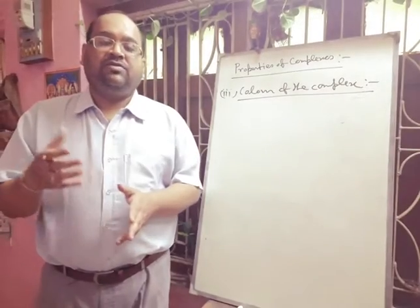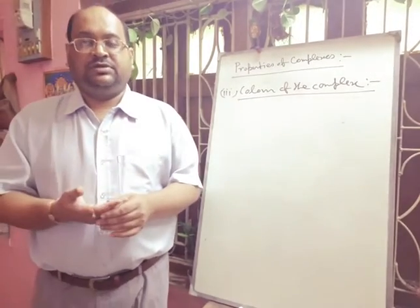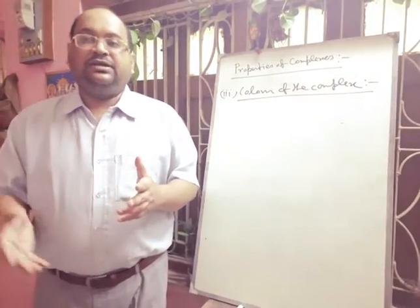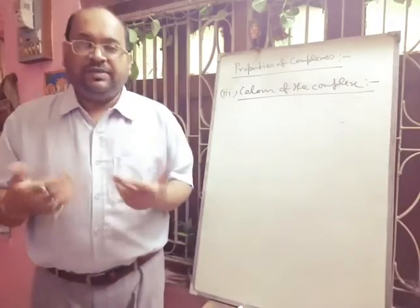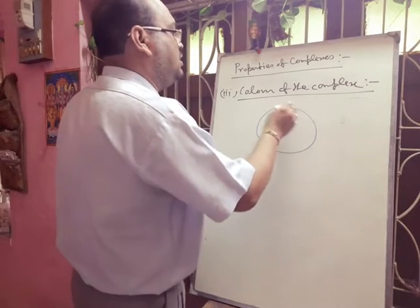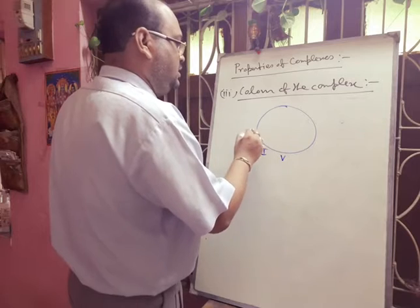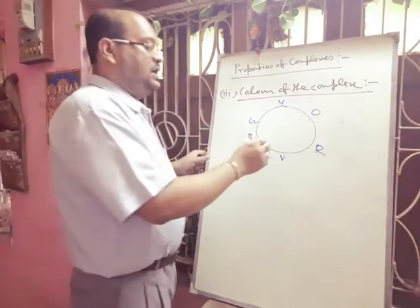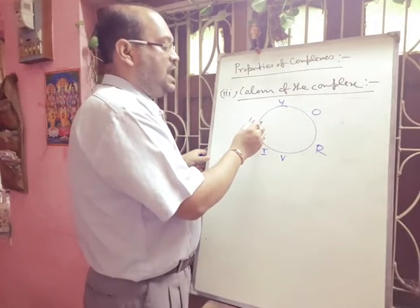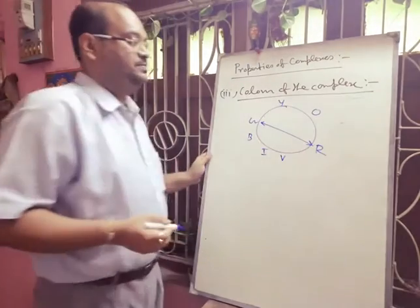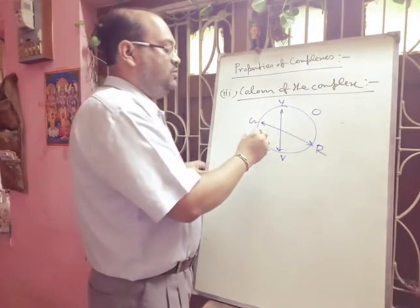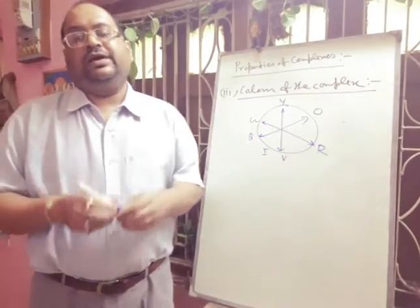By absorbing this energy, electrons go from lower to higher energy level and the complex shows color. White light consists of seven colors. One part of the visible light is absorbed and the other part is reflected — this is called the complementary color. From the complementary color chart: if a complex absorbs green, it shows red; if it absorbs between violet and indigo, it shows yellow; if it absorbs blue, it shows orange.